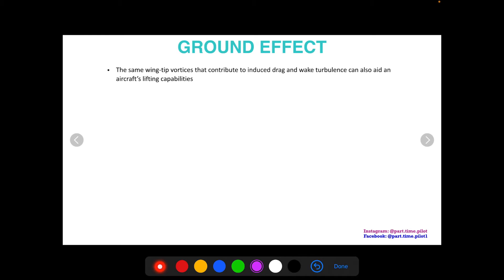Remember those wing tip vortices that cause induced drag and wake turbulence? If you want to watch those videos on what induced drag and wake turbulence are, just click up here in the top right. First one will be induced drag and the second one will be wake turbulence, so you can get some background on that. But these same wing tip vortices can also aid an aircraft's lifting capabilities when near the ground, and I'll show you how.